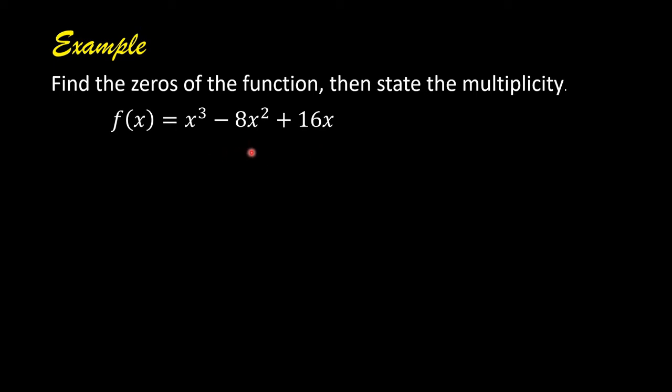Factor the right side. There is a common factor. The common factor is x. Factor it out. So we have f of x equals x times the quantity x squared minus 8x plus 16. x squared minus 8x plus 16 is a perfect square trinomial. So this can be factored as x minus 4 and x minus 4.